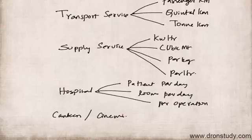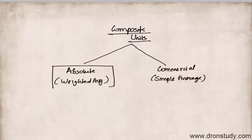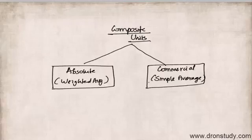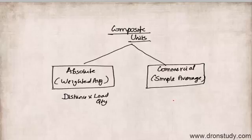Composite units express two different factors together — for example, ton kilometers or quintal kilometers, linking tons with kilometers. The first method is absolute, which is the weighted average tons kilometers. This is the sum total of tons kilometers arrived at by multiplying the various distances by their respective load quantities.